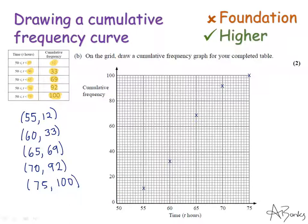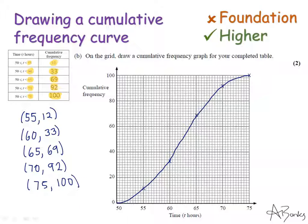The final step is to join the points up to make a smooth curve. It should be almost like an S-shape — it starts off curving upwards, goes roughly straight in the middle, and then curves up to reach the top. You definitely need to do this with a pencil, and if you get any wobbly bits just rub them out and try to get it really smooth. So that's my cumulative frequency curve.